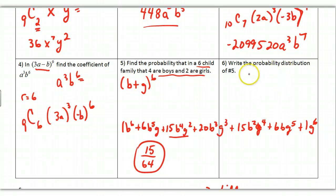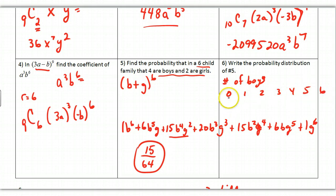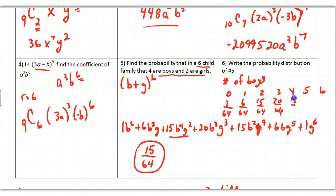For a probability distribution, list the number of boys (0 through 6) and the corresponding probabilities out of 64: 1/64, 6/64, 15/64, 20/64, 15/64, 6/64, 1/64. The numerators add up to 64, so all probabilities sum to 64/64 = 1. A probability distribution shows all possible outcomes and their probabilities.